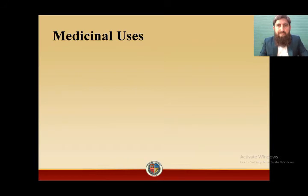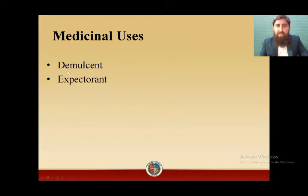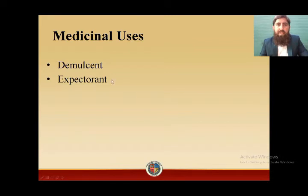Now we will study the medicinal uses of Glycyrrhiza glabra. It is used as a demulcent — demulcents are compounds that have the ability to soothe the mucous membrane. The second use is as an expectorant. Expectorants are antitussive drugs used in productive cough to expel out sputum.